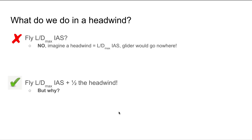So that's still air — but what do we do in a headwind? How do we adjust the speed that we fly for a headwind? The naive approach might be to just keep flying your L over D max airspeed. But if you take this to the extreme and imagine fighting a headwind equivalent to that L over D max airspeed, the glider would go nowhere — you would just slowly sink to the ground. So the recommendation is to add half the headwind to that L over D max airspeed and fly that into a headwind. We're going to talk about why and how that affects your glide ratio.